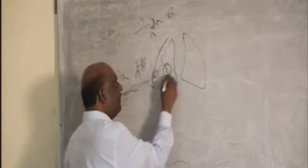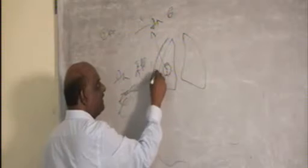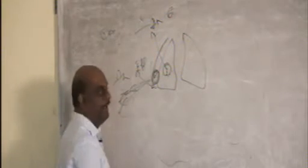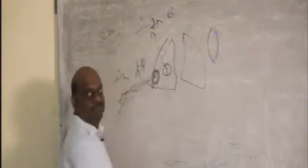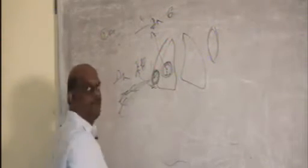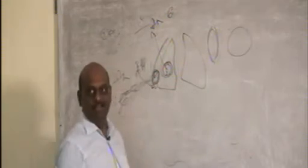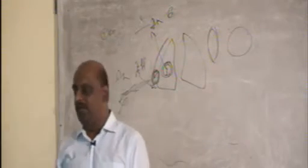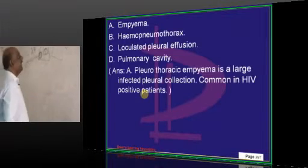If you look at radionatically, how do you differentiate the two? Typically, when the pus is in the pleural cavity, it will be like a fusiform collection. Whereas when the pus is there in the lung, it is typically a spherical collection of pus. That is how you differentiate between empyema and the lung abscess.